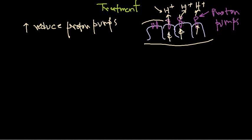If you block this proton pump, it leads to less release of protons outside, so our gut lumen will be less acidic. That results in less damaging effect on the epithelial cells after Helicobacter pylori infection. However, proton pump activity is also very important because some proteolytic enzymes require the acidic environment to function properly.